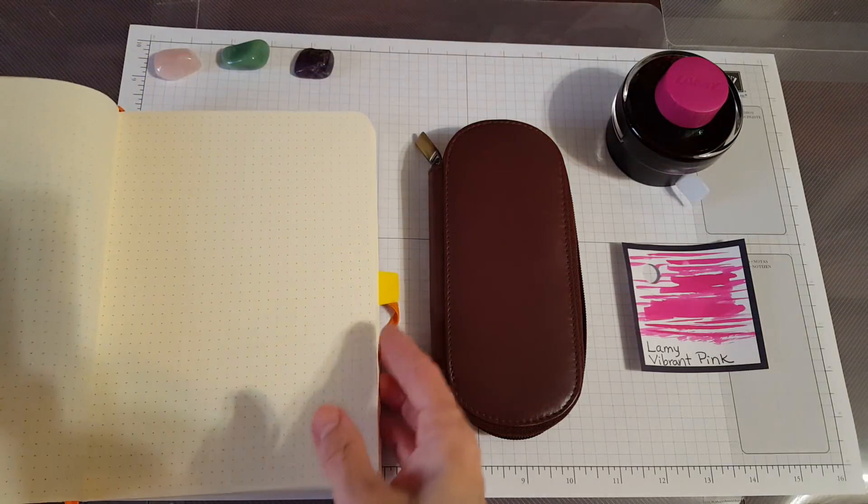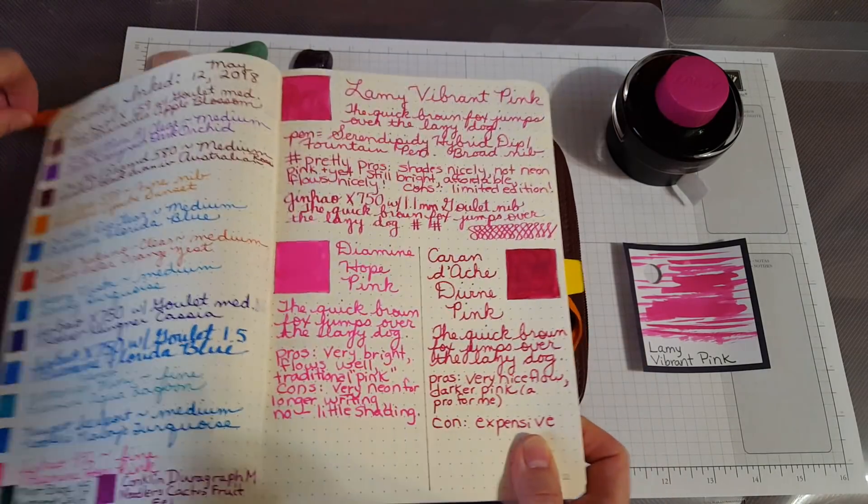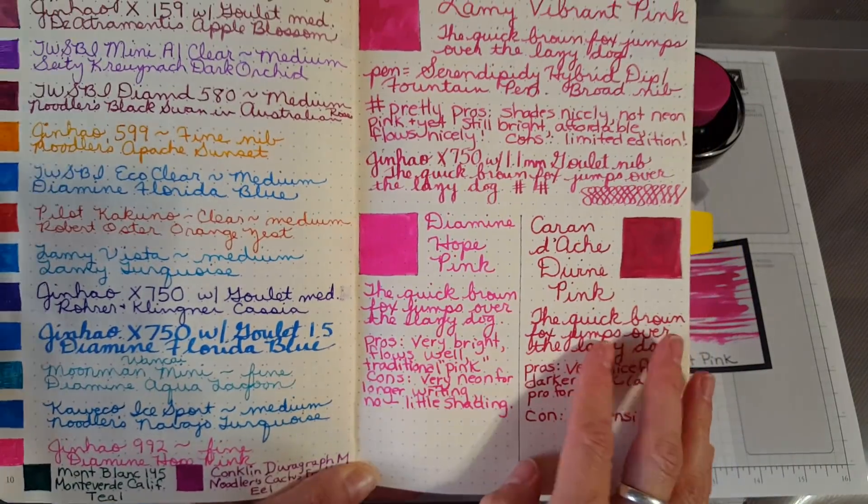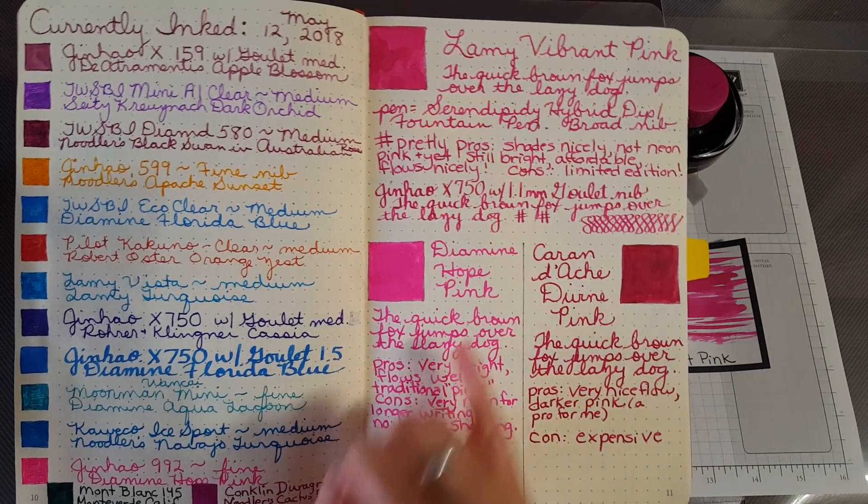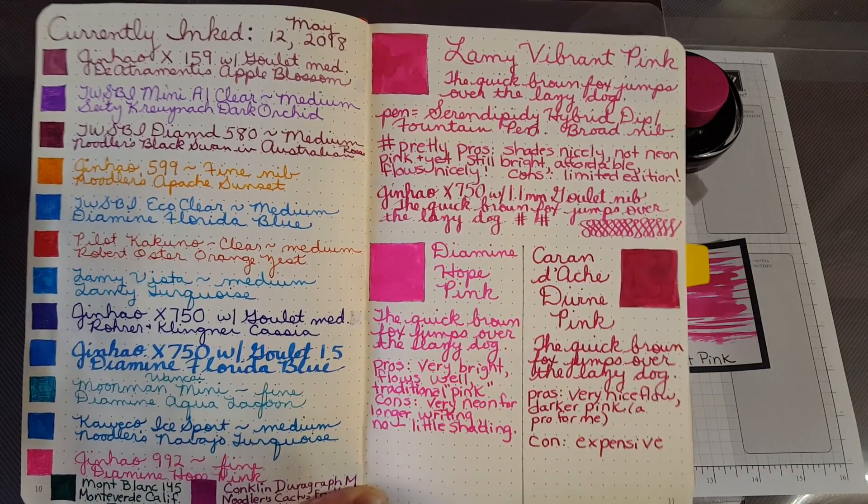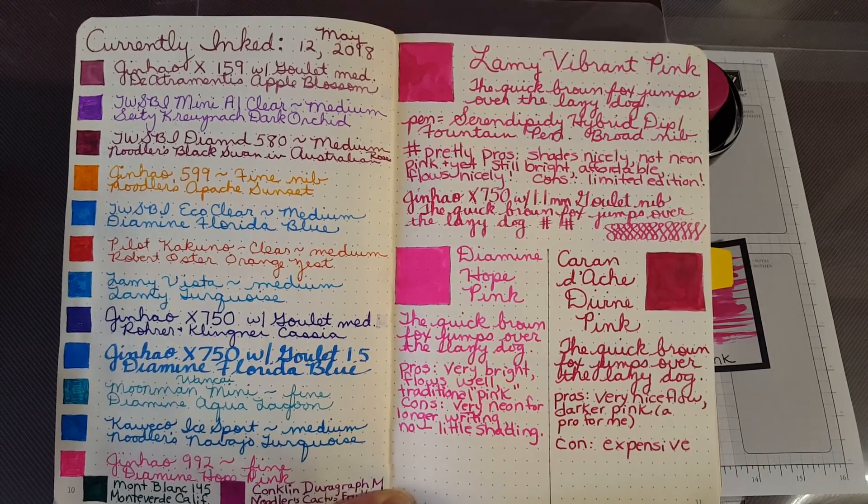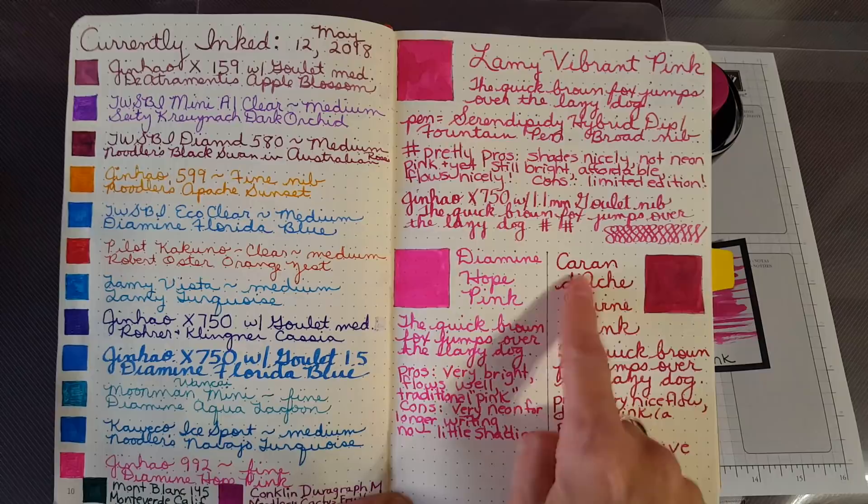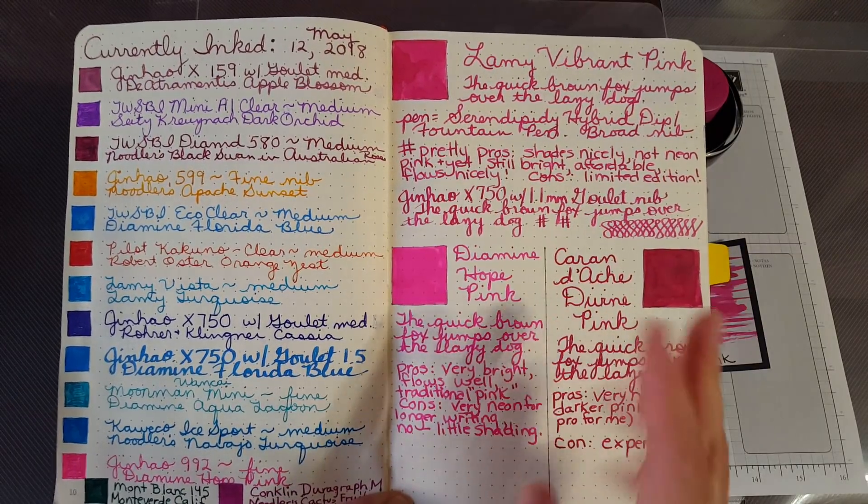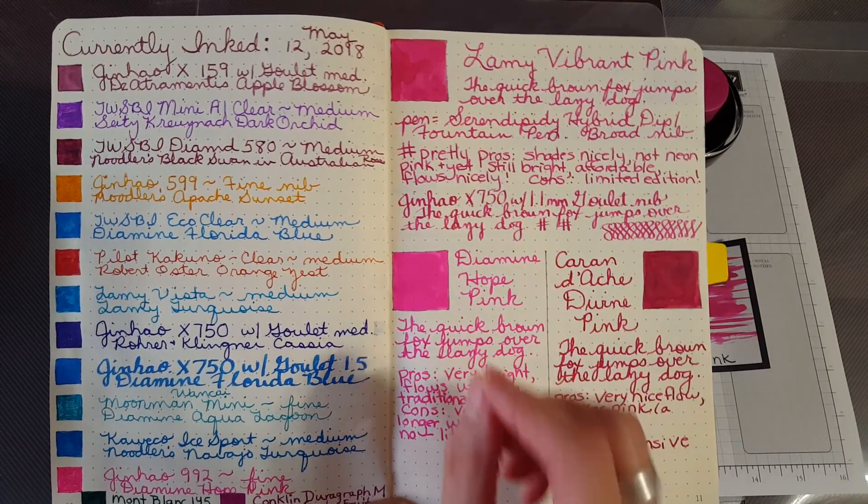I wanted to show where - this was what I was working on here and I didn't really leave myself enough room, but it does get a chance to show you how these three inks compare: the Lamy Vibrant Pink, the Diamine Hope Pink, and then the Caran d'Ache Divine Pink. It was so interesting that I was so knee deep in pink this week and a pen friend sent me four ink samples and one was this Divine Pink. So I had a really good time being able to compare because these are all three very distinctly different.